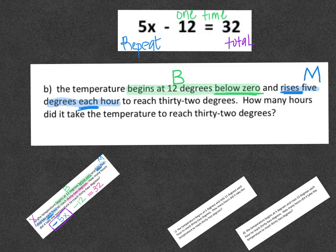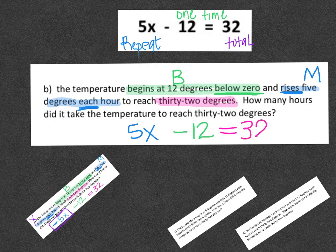And then our last and final thing was the total is 32 degrees. When we go to fit this one in there, if you look at the B, again 12 degrees below zero is minus 12. Then when you get to the next part, it says rises 5 degrees each hour. Rises means it's a positive. That means 5x. And then we end up with 32 degrees equals 32.